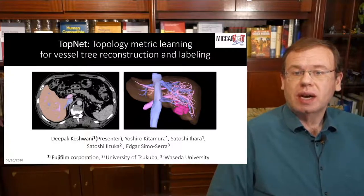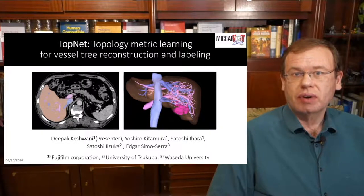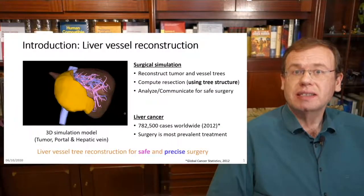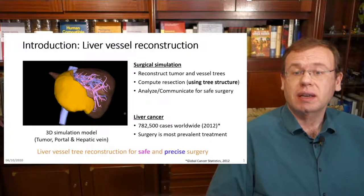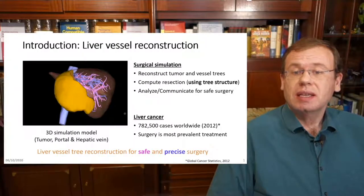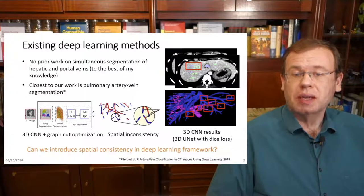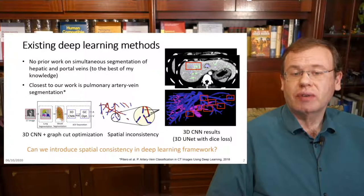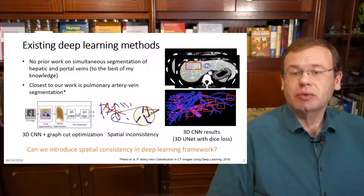The next paper that I want to highlight is TopNet, Topology Metric Learning for Vessel Tree Reconstruction and Labeling. So this is also a very important topic in particular for liver vessel reconstruction and liver tumor treatment. And in particular, interesting here is that you do not just want to reconstruct the vessels, but you also want to differentiate arteries and veins. So they are colored here with two different colors. So what we see in typical reconstruction models is that they have problems when they are extracting the vessels. So if you have a 3D CNN and a graph card optimization, you often get problems with spatial inconsistencies.